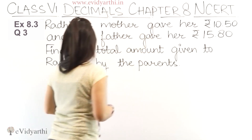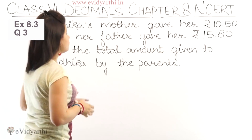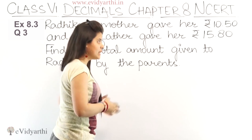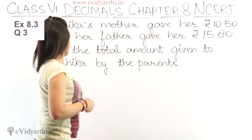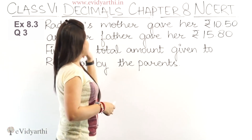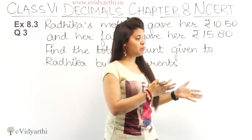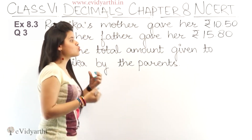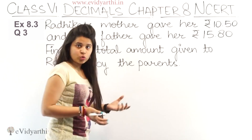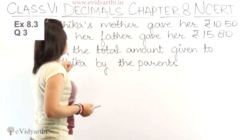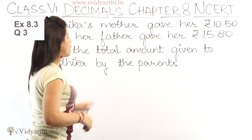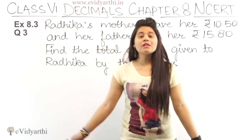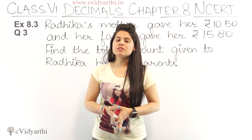In this question we have: Radhika's mother gave her rupees 10.50 and her father gave her rupees 15.80. We are given that Radhika's mother gave her 10.50 rupees and her father gave her 15.80 rupees. Now we have to find the total amount given to Radhika by the parents.